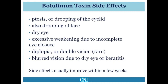Injection of botulinum toxin for hemifacial spasm usually does not have any general or systemic side effects. Local side effects may occur, including drooping of the upper eyelid due to spread of the botulinum toxin from the eye-closing muscles to the eye-opening muscles, and drooping of the lower face due to excessive weakness of the muscles responsible for normal smiling.